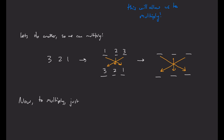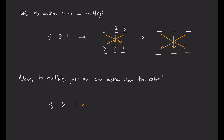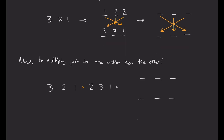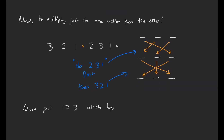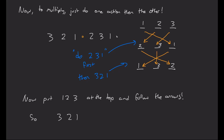Now, to multiply these permutations, just do one action and then do the other one. So let's take (3, 2, 1) times (2, 3, 1). I'm going to do the action (2, 3, 1) first, and then below that I'm going to write the action of (3, 2, 1). Then we'll write 1, 2, 3 at the top to see how these numbers are being rearranged, and we just follow the arrows. Our first action sends 2 to the first spot, 3 to the second spot, and 1 to the third spot. Following the arrows at the end sends 1 back to the first spot, 2 to the last spot, and 3 to the middle spot. So we get (3, 2, 1) composed with (2, 3, 1) equals (1, 3, 2) as a permutation.